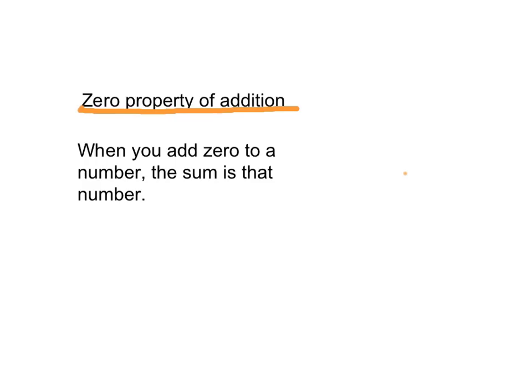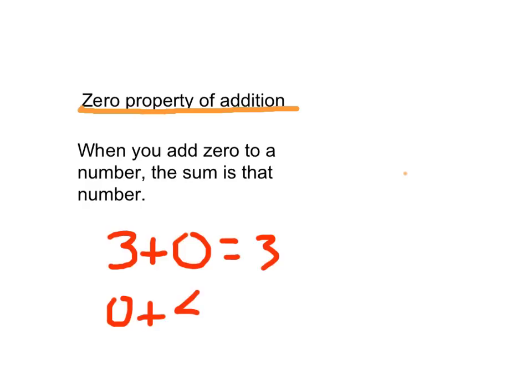Here's the vocabulary — take a moment to write it down. You might want to hit pause. Zero property of addition: when you add zero to a number, the sum is that number. Write down some examples: 3 plus 0 equals 3; 0 plus 4 equals 4; and 7 is equal to 0 plus 7. Those are some examples of the zero property of addition.